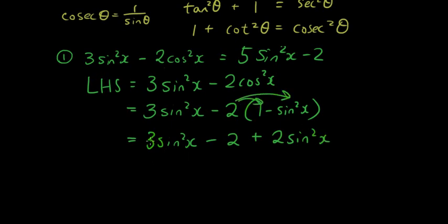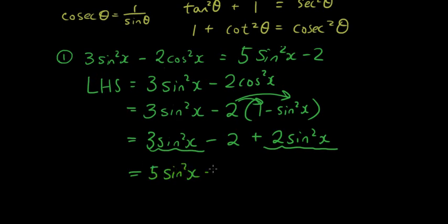Then 3 sin squared x and 2 sin squared x are like terms, so I can combine them into 5 sin squared x minus 2, which is the right hand side. So we've proven it.